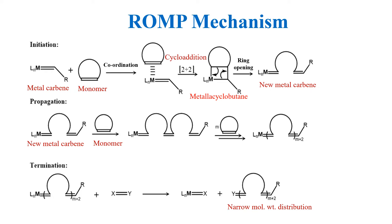All these steps of polymerization are reversible. The strain of the ring favors the ring opening, and therefore this is the driving force for the polymerization of cyclic olefins.